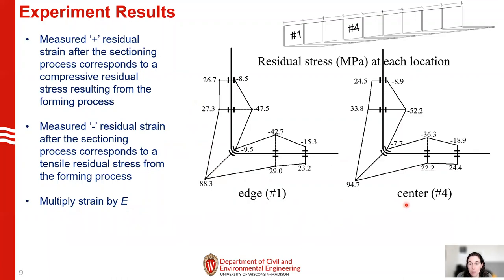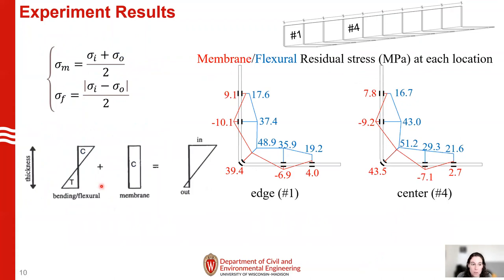We can now use this data to calculate the membrane and flexural residual stresses. We take our data and divide our measured residual stresses into bending and membrane components, shown here. Membrane is shown in red — the sign for membrane indicates tension positive or compression negative. Flexural stresses vary through thickness with compression at the interior and tension on the exterior; for convenience these are shown as positive. Here are our values for membrane and flexural for the edge specimen and the center specimen, with the largest values at the corners.